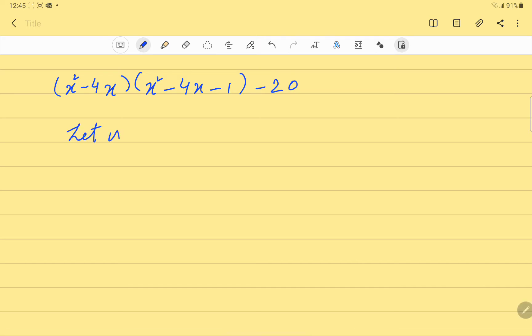So, we will assume x squared minus 4x equal to y and we substitute it in the given expression. So, the given expression becomes y into (y minus 1) minus 20.